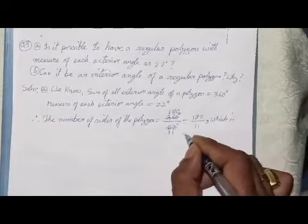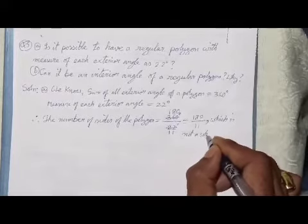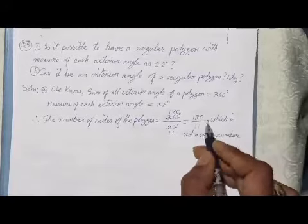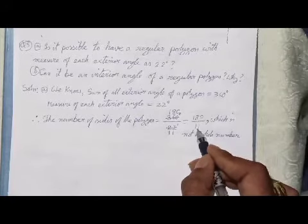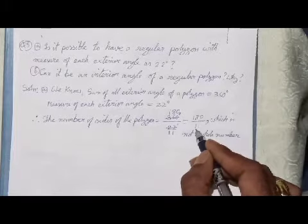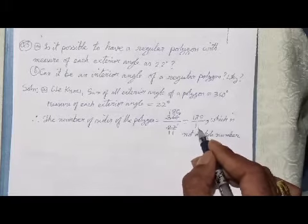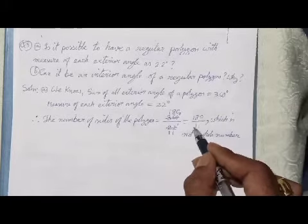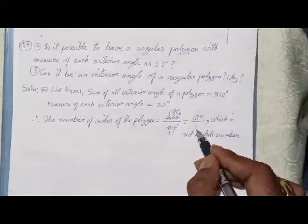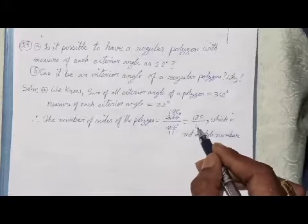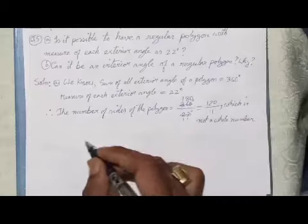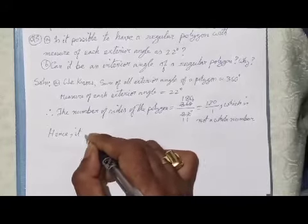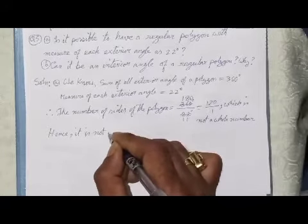180 divided by 11 is not a whole number because 180 is not exactly divisible by 11. The number of sides of a polygon cannot be a fraction, so it is not possible to have this type of polygon.